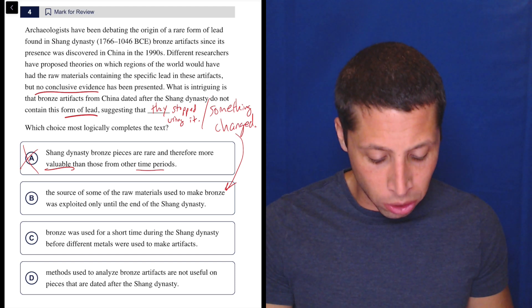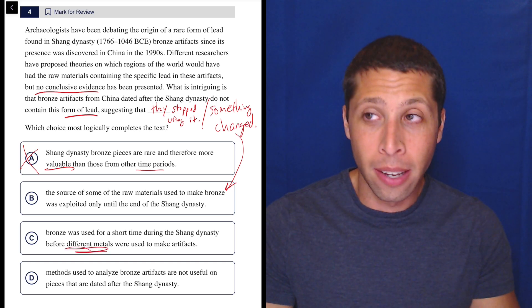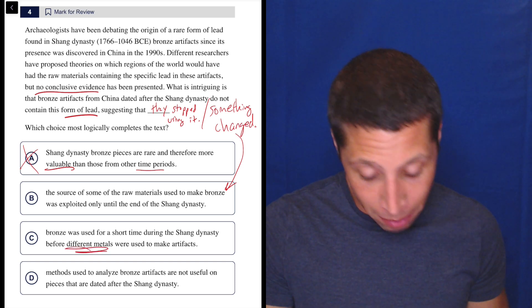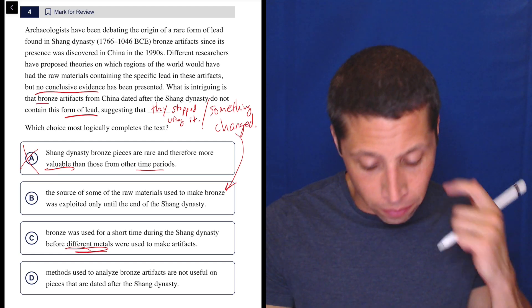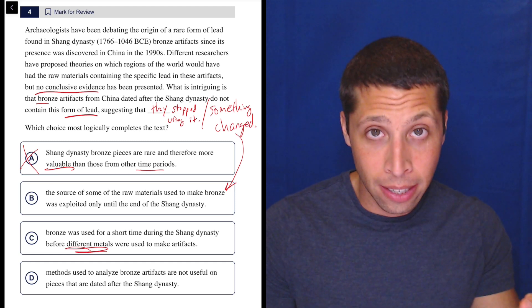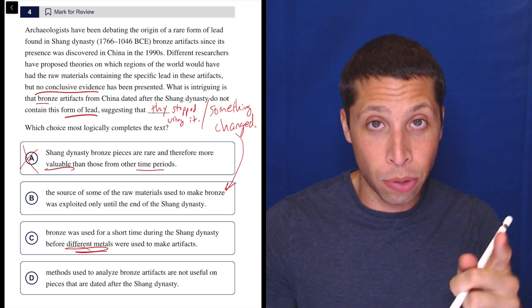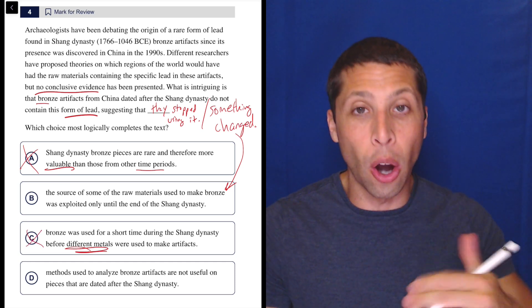Bronze was used for a short time during the Shang Dynasty before different metals were used to make artifacts. Different metals? No, it's about the lead. Maybe they kept using lead. Maybe they didn't. I mean, it does say what is intriguing is bronze artifacts from China dated after do not contain this form of lead. It does not say it does not contain lead. In fact, I think bronze needs to. So it doesn't work. It's one of those things that they're definitely going too far.